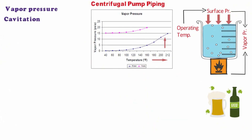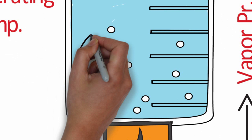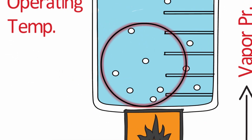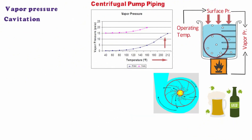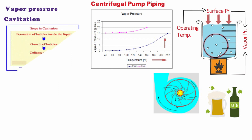The next term is cavitation. Bubbles form inside the liquid when it vaporizes due to a phase change from liquid to vapor. Just like in a closed container, vaporization of liquid can happen in a centrifugal pump as well when the local static pressure reduces below the vapor pressure of the liquid at pumping temperature. The steps in cavitation are: first, bubble formation takes place in the liquid due to phase change. Then these bubbles can grow to some extent, and when the pressure reaches the vapor pressure, the bubble collapses and cavitation occurs.